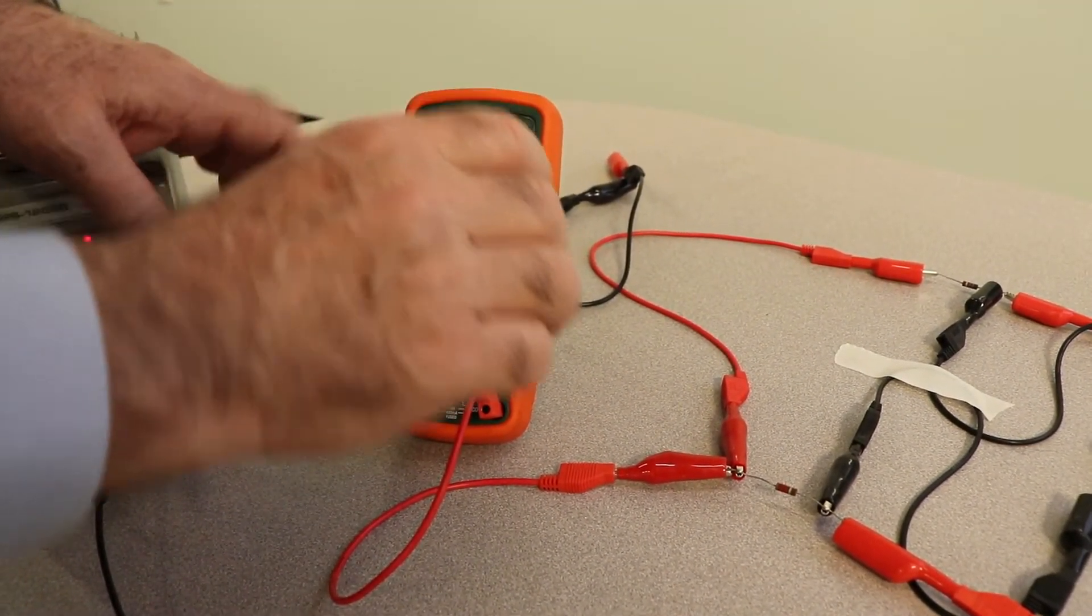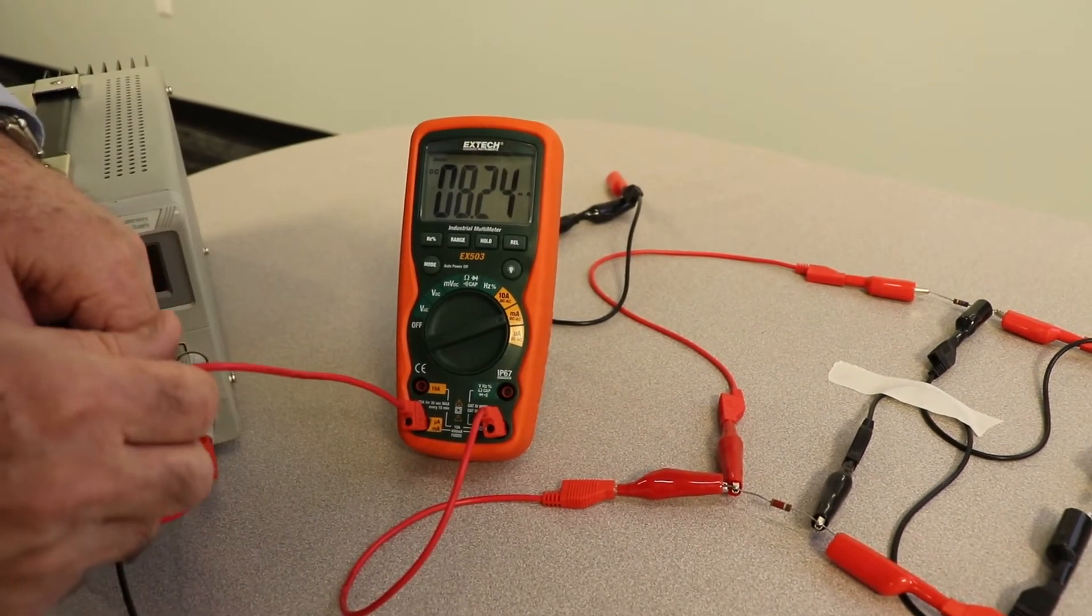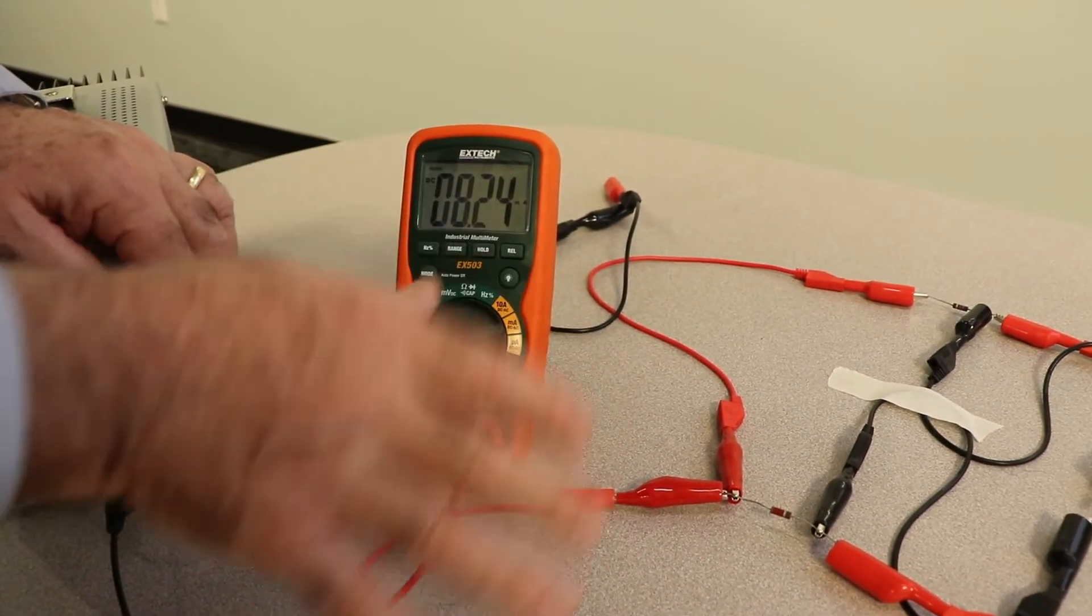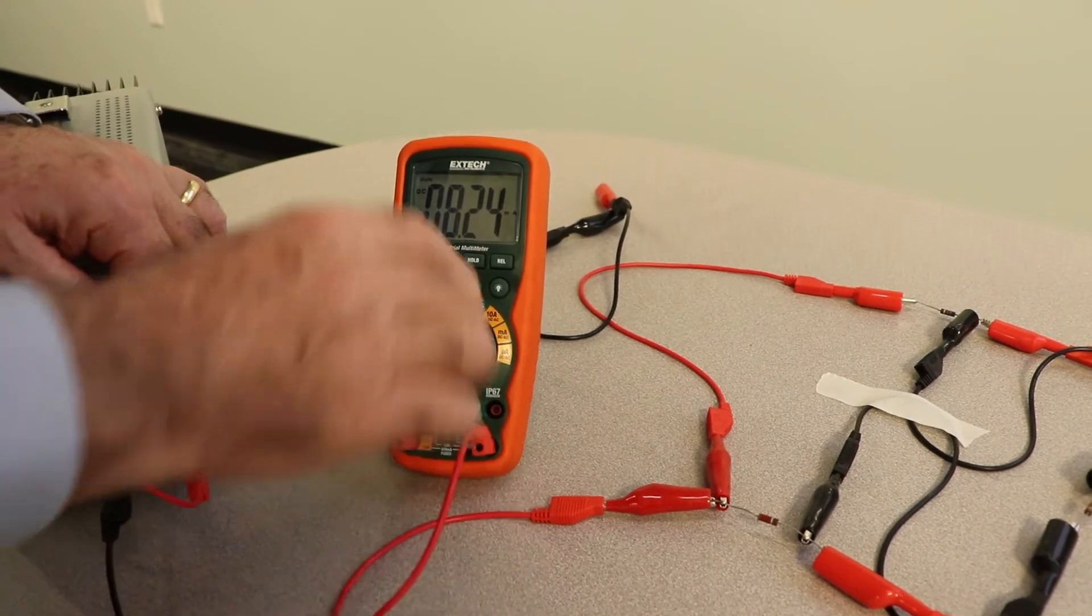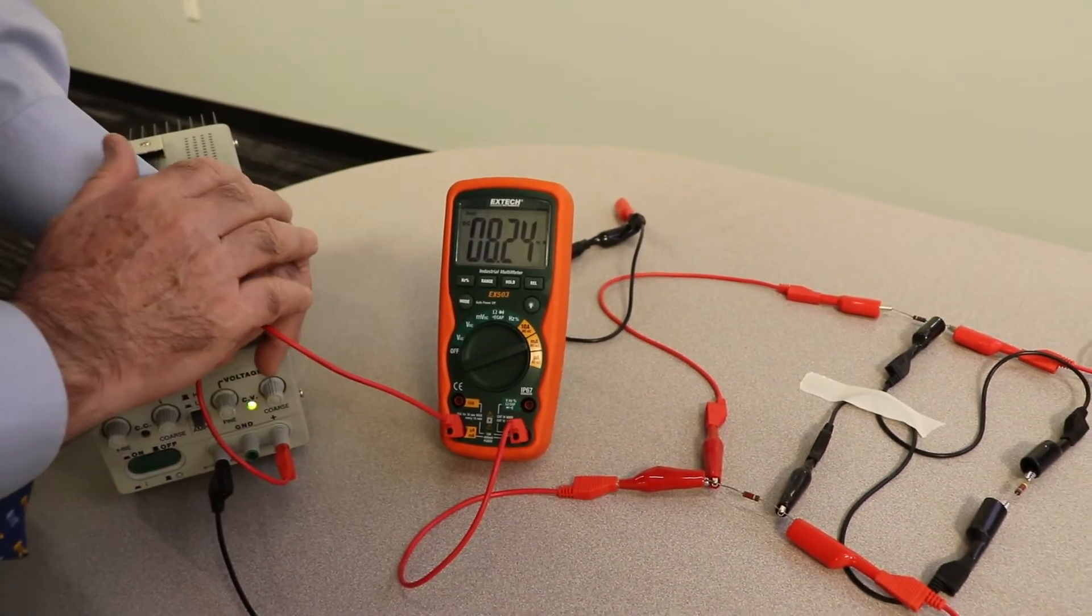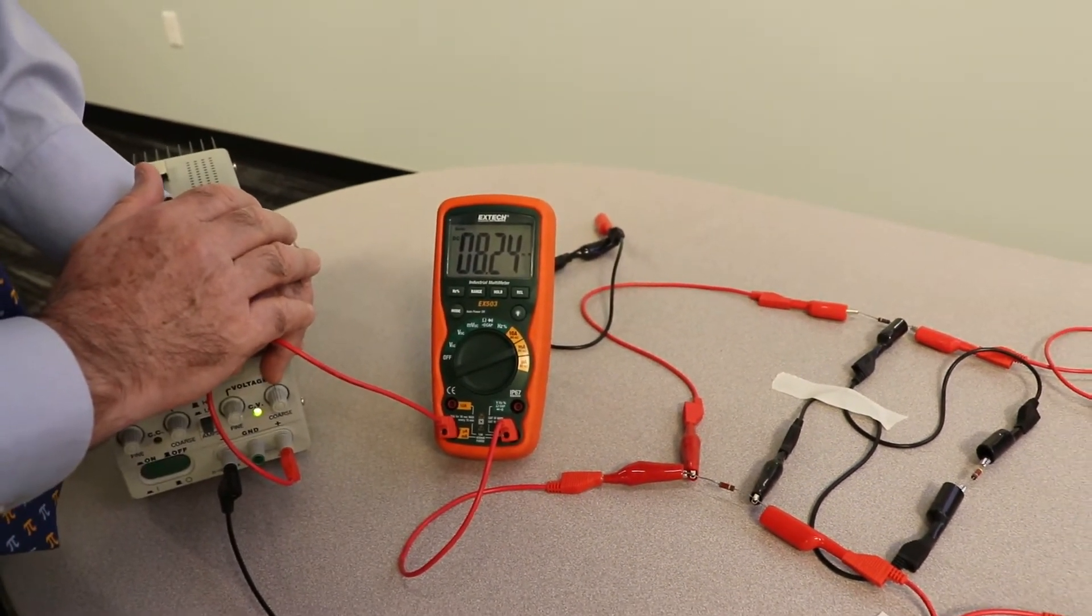So if you hook this thing up like a voltmeter, you'll short it out because tons of electrons are going to want to go in there because it has no resistance. Electricity always wants to flow the easiest path.